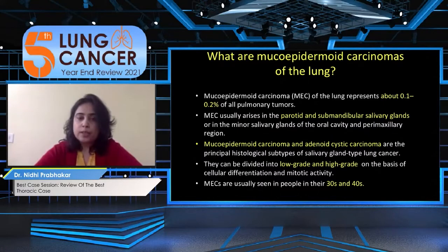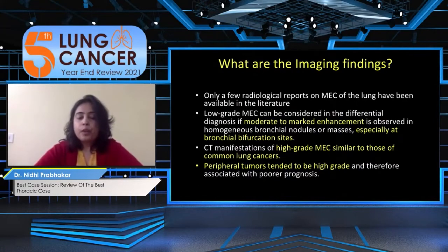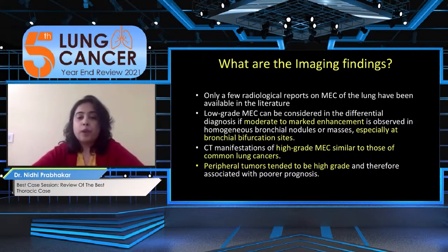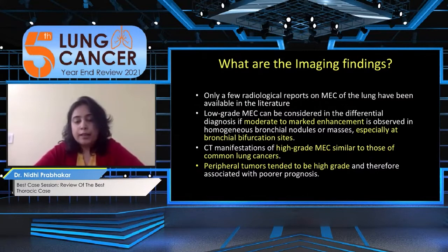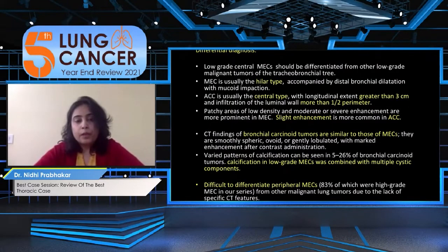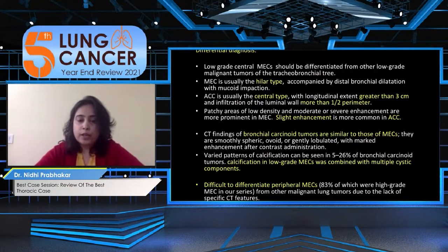Low-grade mucoepidermoid carcinomas are typically seen in patients in their 30s and 40s — this patient was 42. On imaging, low-grade tumors are central, show moderate to marked enhancement, and are especially seen at bronchial bifurcation sites, similar to this case. High-grade ones are peripheral and resemble other lung tumors.